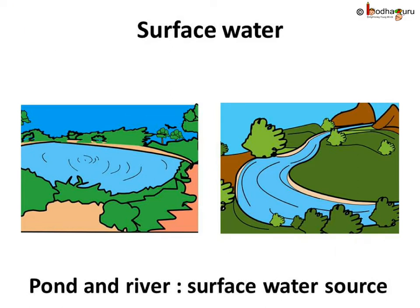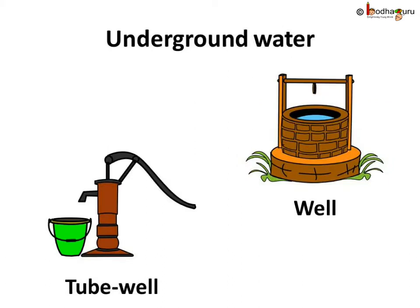Pond, lake, river, etc. are sources of sweet water on earth's surface. Still, in most places we see people digging wells and tube wells for drinking water, because people know there is water underground. They use the underground water through tube wells, wells, etc.